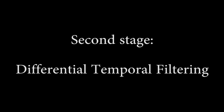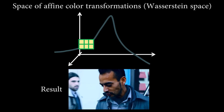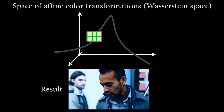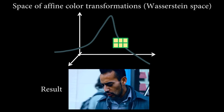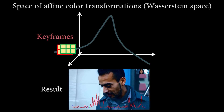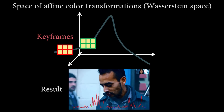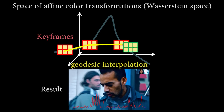As we have seen, treating frames independently results in artifacts. Instead, we propose a novel temporal smoothing scheme that considers our set of transformations as a curve in a high-dimensional space. Regions of this curve with high curvature correspond exactly to instances in the video with temporal artifacts. Based on this observation, we design a new smoothing technique akin to curvature flow that places keyframes in regions of low curvature and performs a geodesic interpolation in between. We derive formulas for curvature in a principled mass transportation framework.